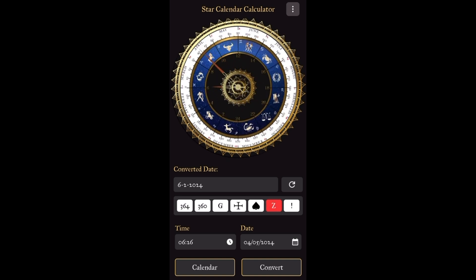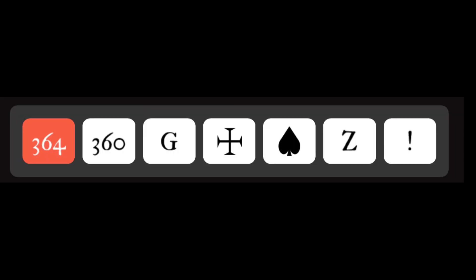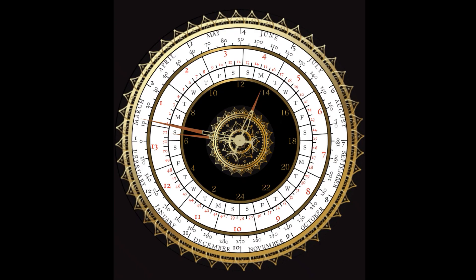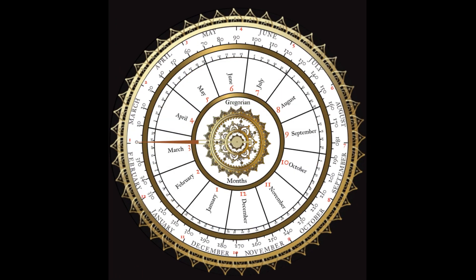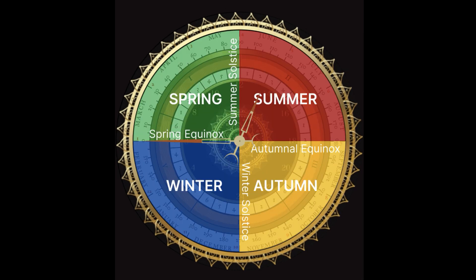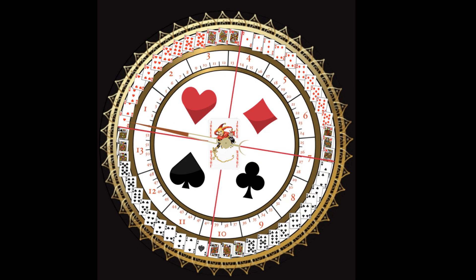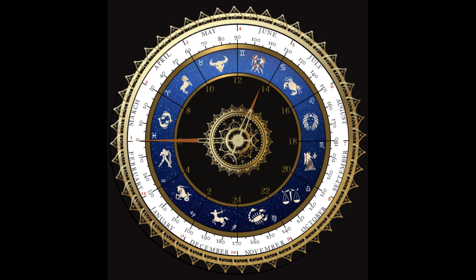Within the Star Calendar Calculator, there are six easy-to-follow clock faces to interact with: the 364-day calendar, the 360-day calendar, the Gregorian calendar in relation to the 360-day calendar, the seasonal display, the 364-day calendar in relation to a deck of cards, and the zodiac display.